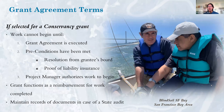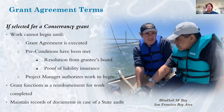Grantees are typically required to maintain general liability, automobile, and other forms of insurance during the grant agreement term. All Conservancy grantees should expect to be audited by the State of California. It is the grantee's responsibility to maintain all necessary records to substantiate and document all payments made pursuant to a Conservancy grant. If a grantee cannot provide adequate records when audited, they may be required to repay the grant funds.